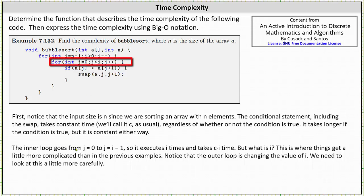The inner loop goes from j equals zero to j equals i minus one, so it executes i times and takes c times i time. But what is i? This is where things get a little more complicated than in previous examples. Notice that the outer loop is changing the value of i. We need to look at this a little more carefully.